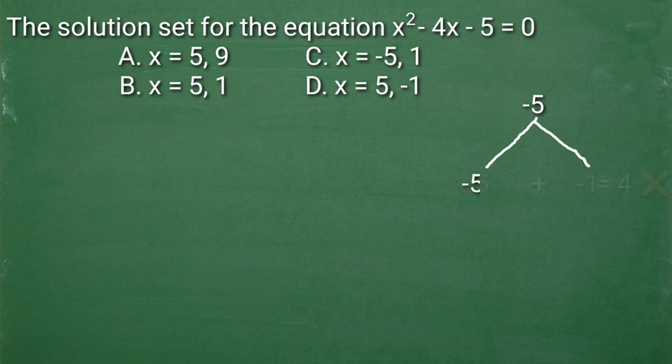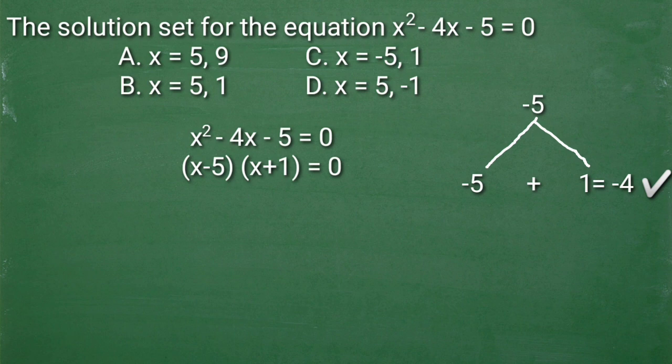So try natin ang negative 5 and positive 1. Pag pinag-multiply natin, equals to negative 5. Negative 5 plus 1 is equal to negative 4. So ibig sabihin, ito yung magiging factor natin. And that would be, X minus 5 times X plus 1 is equal to 0.